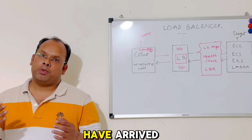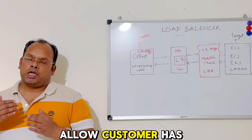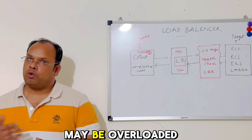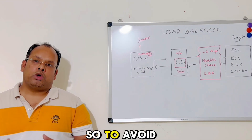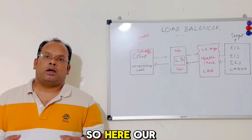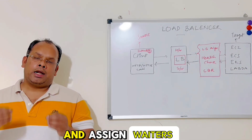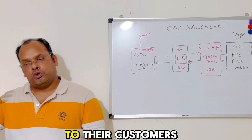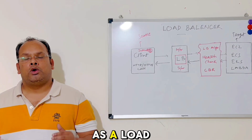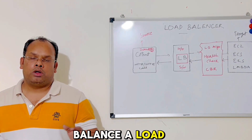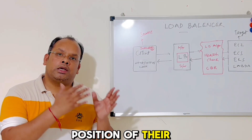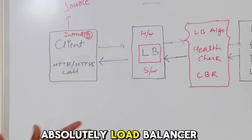If we allow each customer to choose their own waiter, it's possible that some waiters become overloaded while others are idle. To avoid this situation, a restaurant manager facilitates customers and assigns waiters to them. In this scenario, the restaurant manager works as a load balancer — balancing the load so that all waiters are fully utilized.